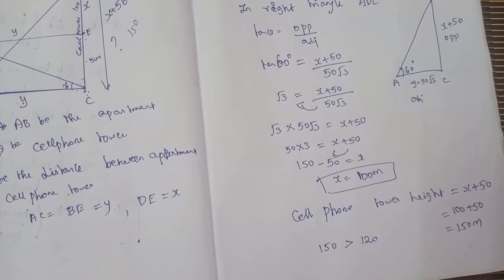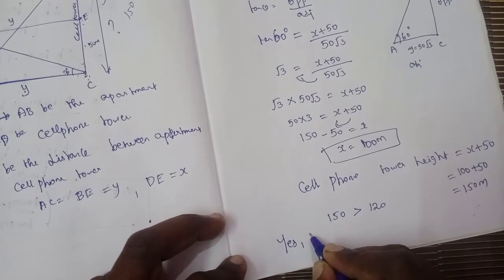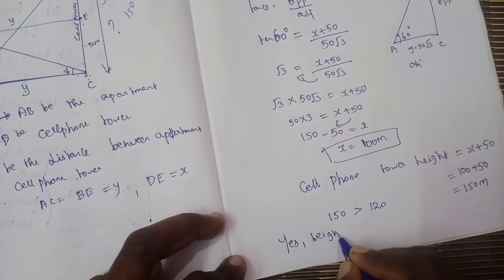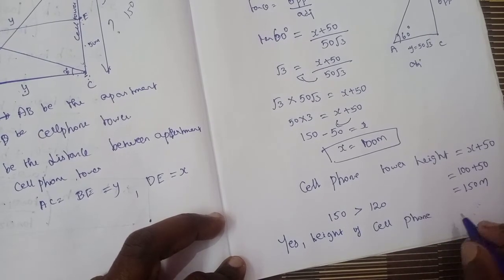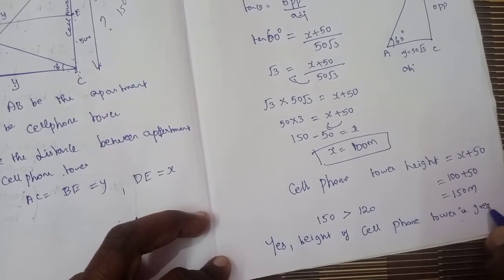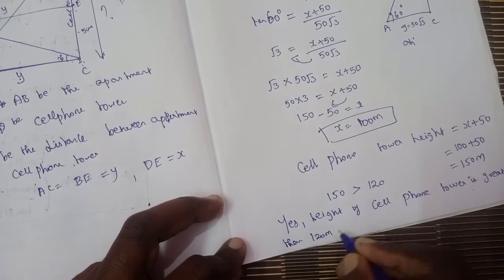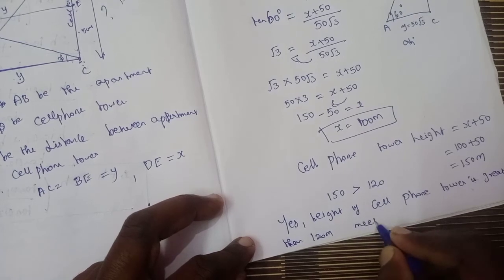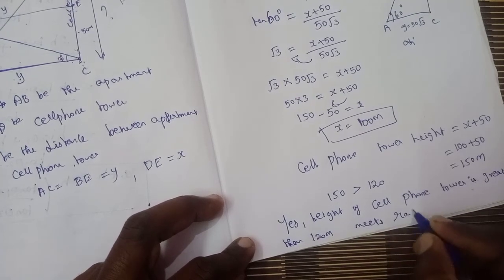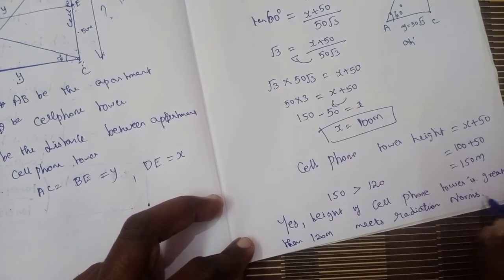Yes, the height of the cell phone tower is 150 meters, which is greater than 120 meters. Therefore, the tower meets the radiation norms.